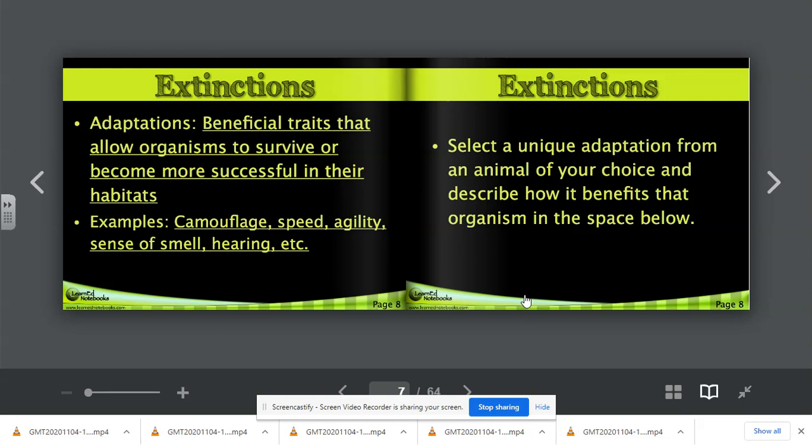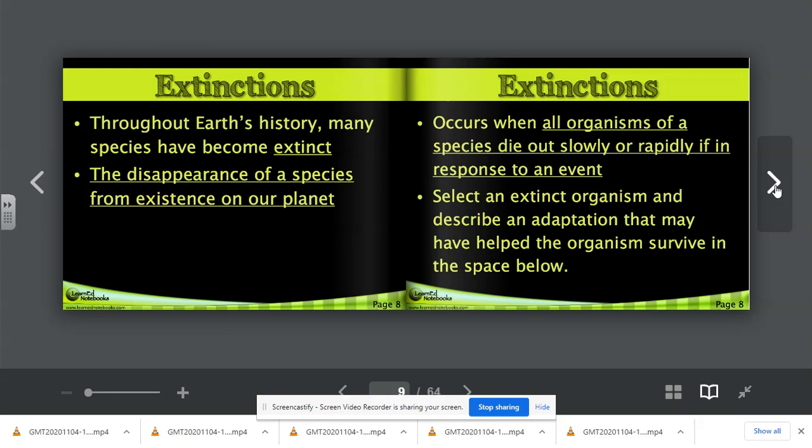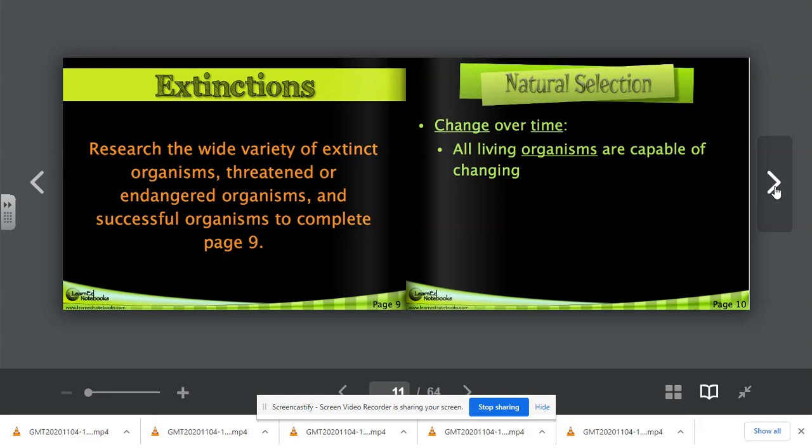Select a unique adaptation from an animal of your choice and describe how it benefits that organism in the space below on page eight. Throughout history, many species have become extinct. That means they weren't able to adapt. They weren't able to survive. The disappearance of a species from existence on our planet is how we define extinction. Extinction occurs when all organisms of a species die out slowly or rapidly in response to an event. Select an extinct organism and describe an adaptation that may have helped the organism survive in the space below.